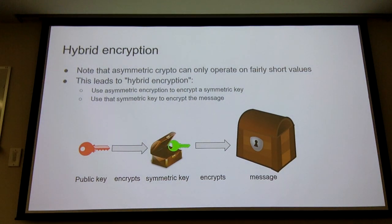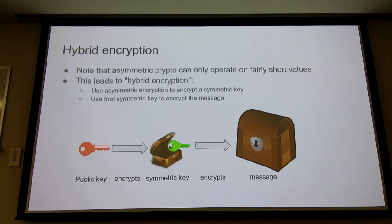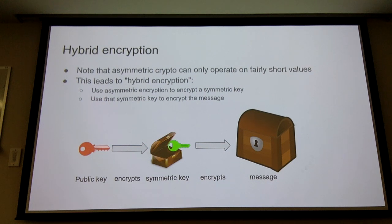Asymmetric schemes can actually only operate on very small amounts of data compared to symmetric keys. So usually what you actually do in practice — and virtually any crypto library will do this under the hood automatically — is produce a random symmetric key and encrypt that instead of your message directly. It will encrypt your message symmetrically, and then encrypt the symmetric key using the public key. This is called hybrid encryption.